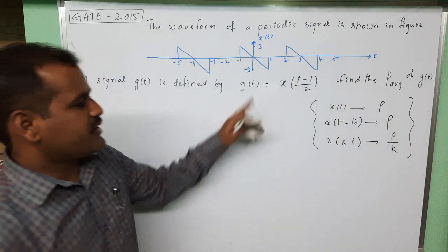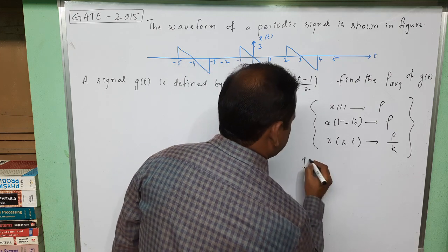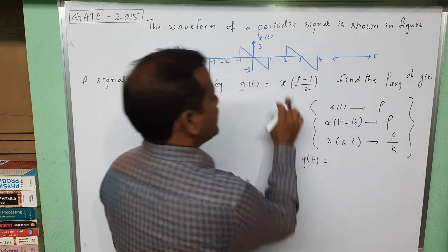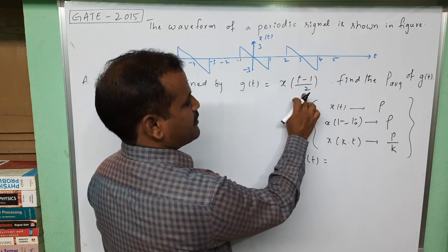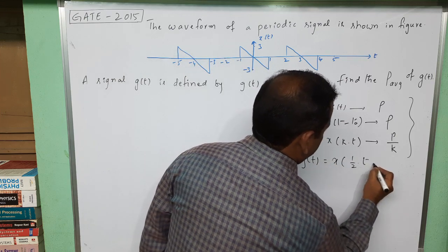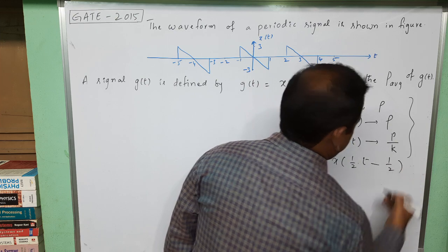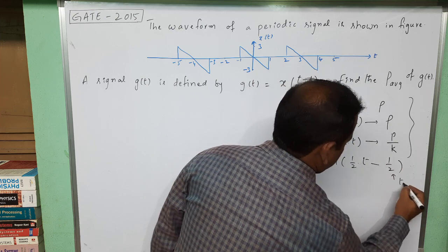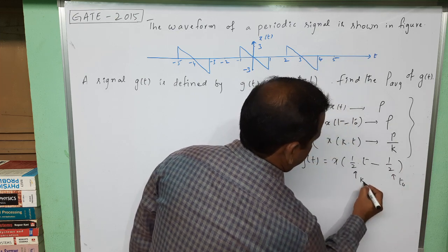Here g(t) is given in terms of x(t) like this: x((t-1)/2). I am writing it as x(1/2 * t - 1/2), so that this is the shifting constant and this is the scaling constant.